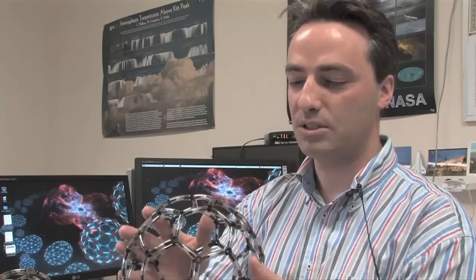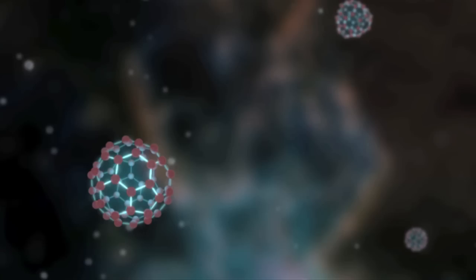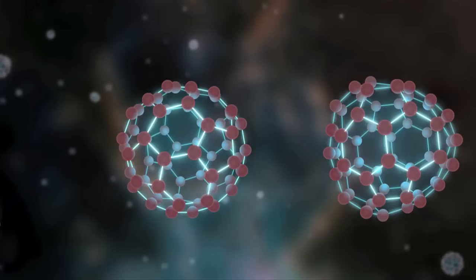We can detect Buckyballs in space through their vibrational motions. These Buckyballs oscillate or vibrate in very different ways, and each way they vibrate corresponds to a very specific color of infrared light that they emit or absorb.